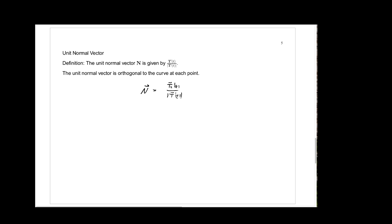It's definitely a unit vector because we're taking the vector T prime and dividing by its own length. The really important thing about this unit normal vector is that it's always orthogonal to the curve at each point — meaning orthogonal to the tangent vector at each point. In other words, N at each value of the parameter t is always orthogonal to T(t).